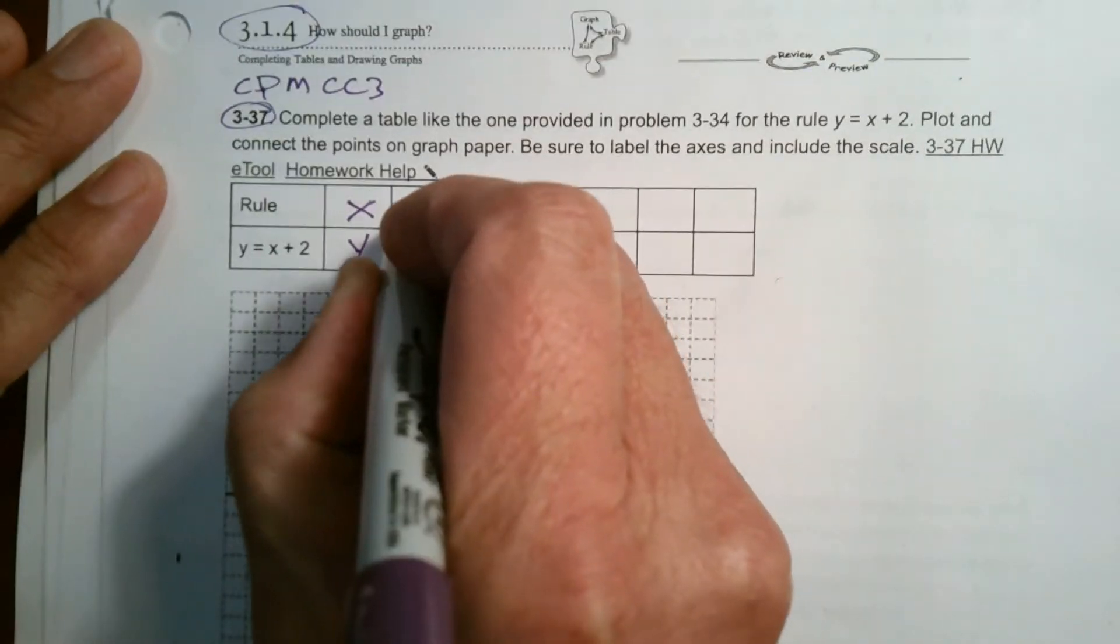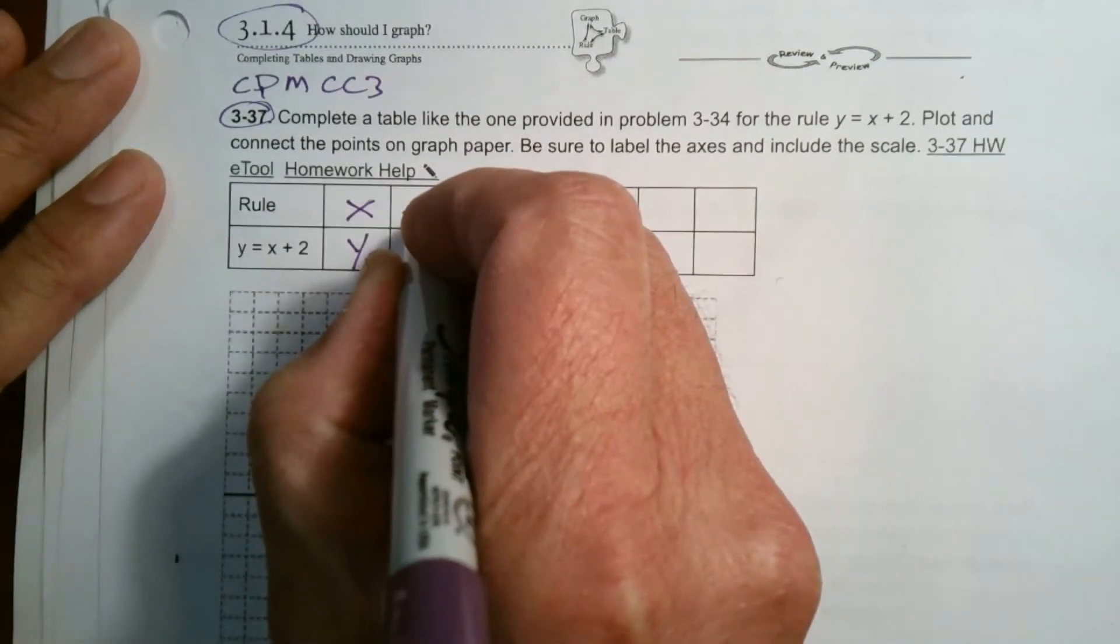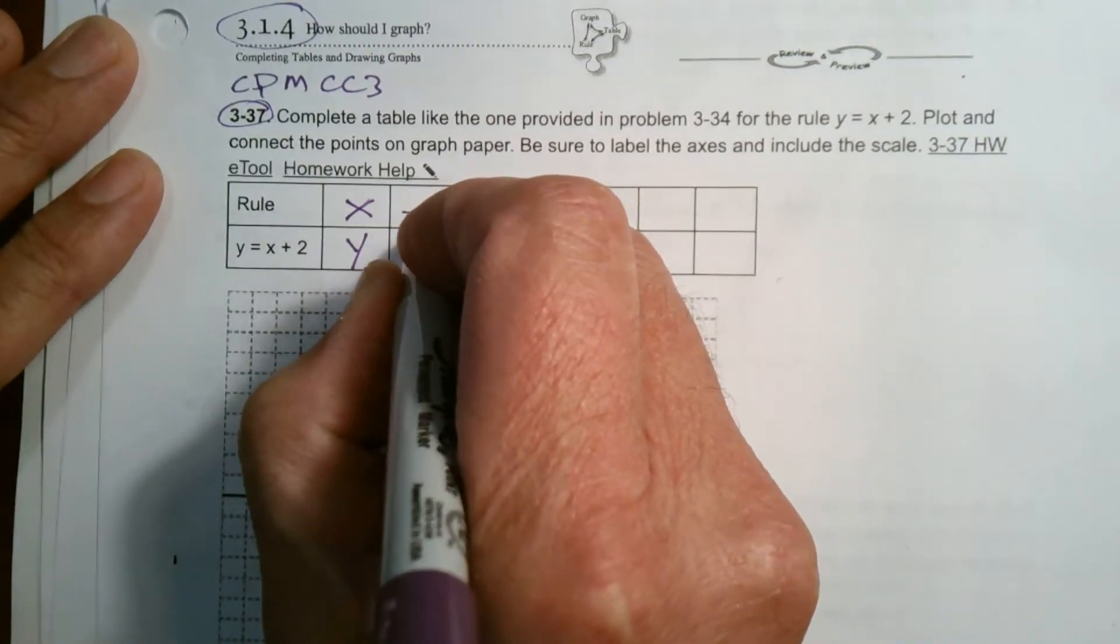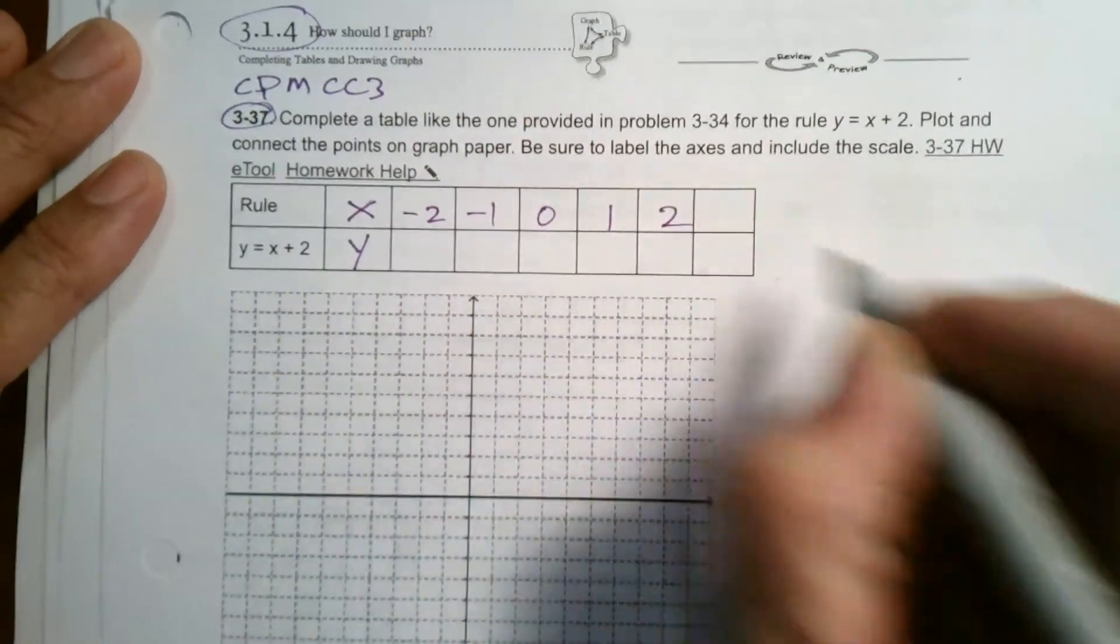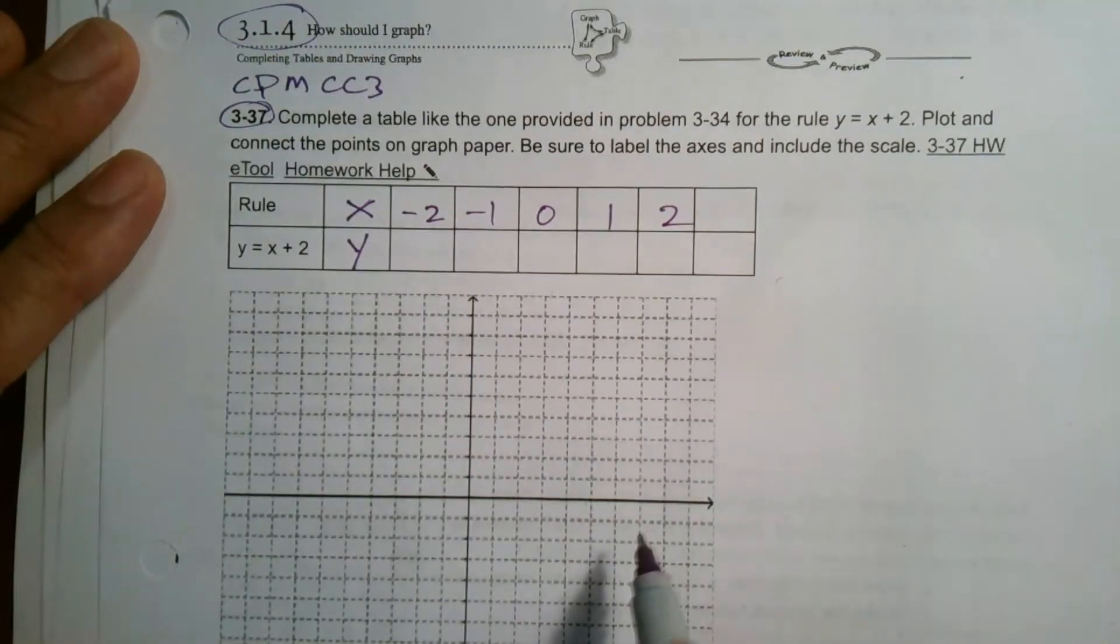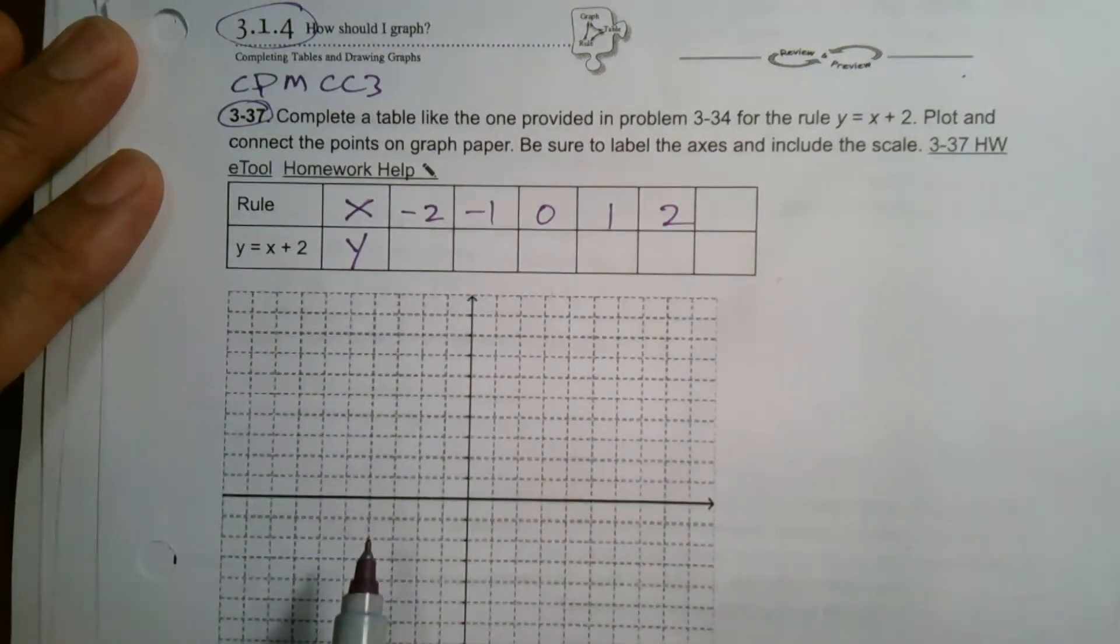Negative 1, 0, 1, and 2. Those are good values to use just to get a sense of what this rule looks like on our graph paper.